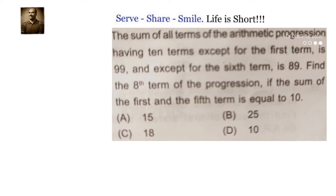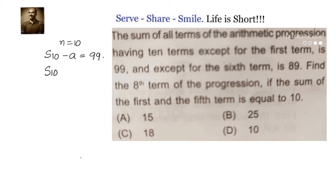Let us write down what information is given to us. We have sum of all terms, and we know there are n = 10 terms. So, S10 minus the first term a equals 99, and we also have the sum of all terms except for the sixth term, so S10 minus a6 equals 89.